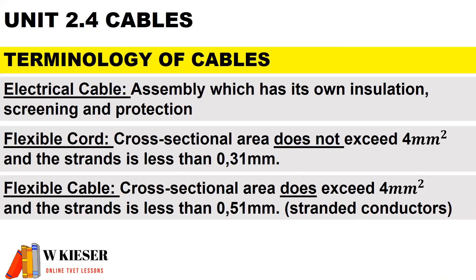The terminology of cables. An electrical cable is an assembly which has its own insulation, screening, and protection. A flexible cord has a cross-sectional area which does not exceed 4 mm², and the strands are less than 0.31 mm. A flexible cable has a cross-sectional area which does exceed 4 mm², and the strands are less than 0.51 mm.